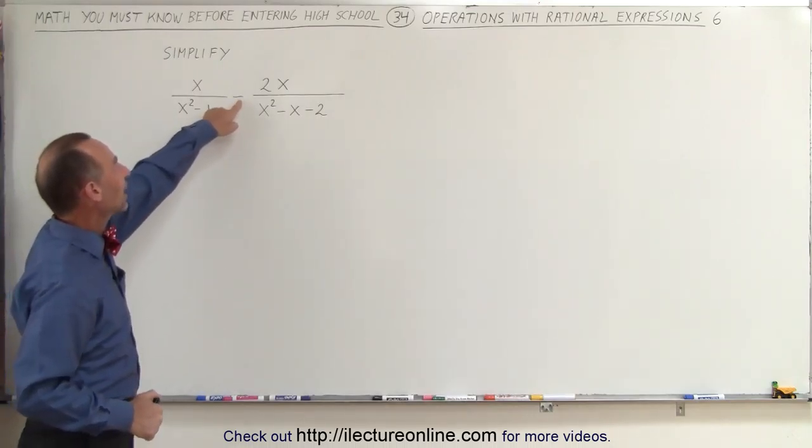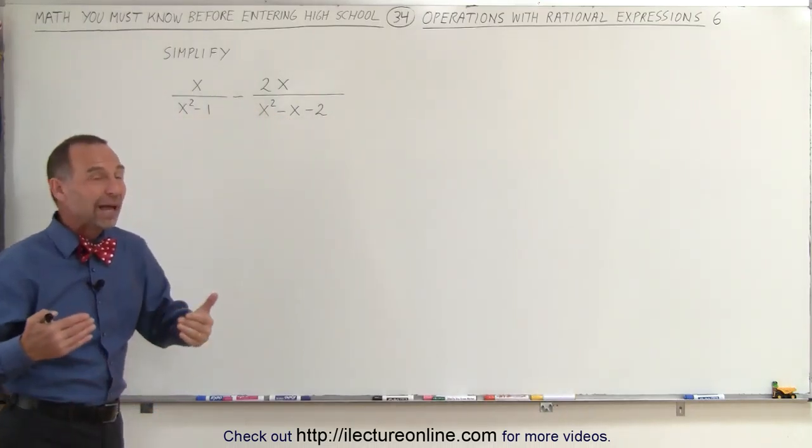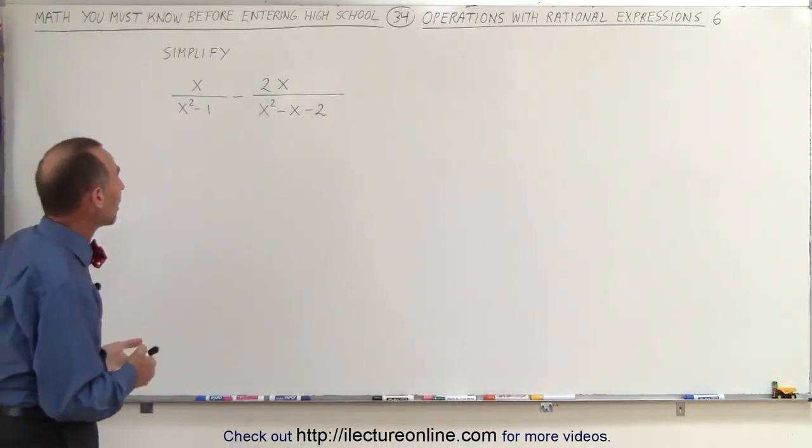Since we have a negative sign here, that means we're subtracting the second rational expression from the first, which means we have to have common denominators. They don't look like they're common denominators, so we have to make them common.